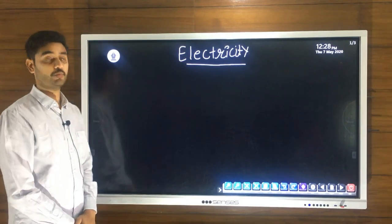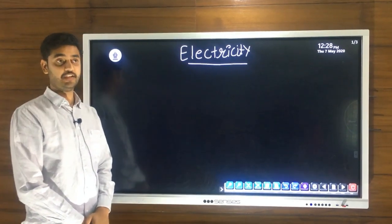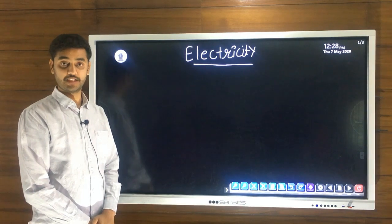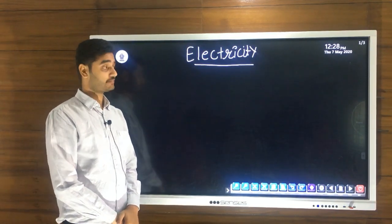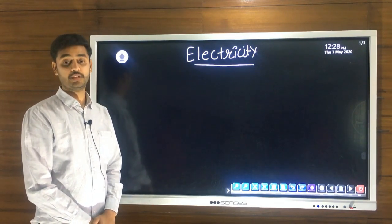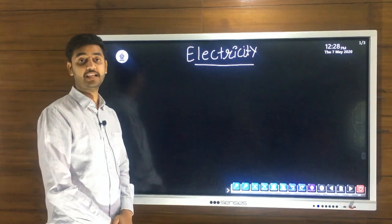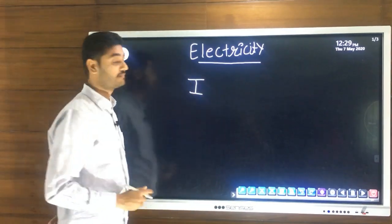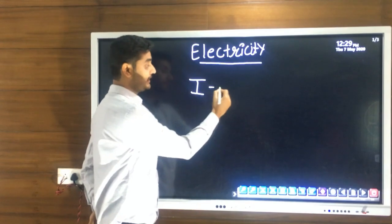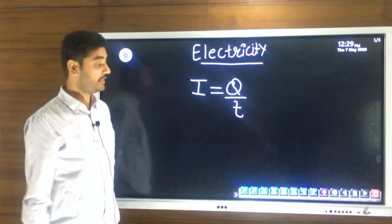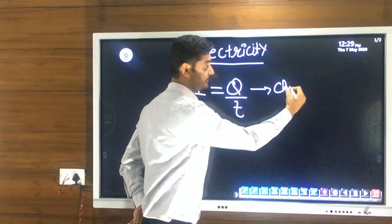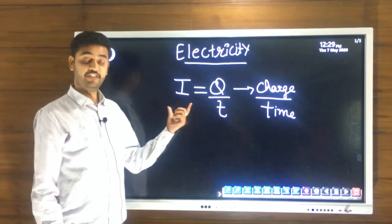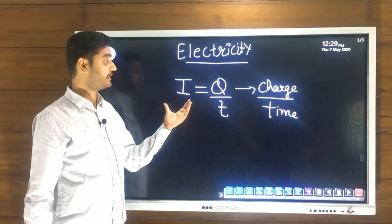We will discuss some important topics of electricity. In class, we discussed what electricity is and its uses. We also discussed charge and its properties. Then we discussed an important entity of electricity — electric current, represented by I, and mathematically written as I = Q/T, where Q is charge and T is time. The definition: electric current is the flow of charges.